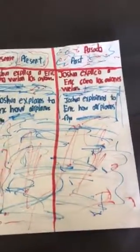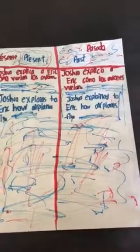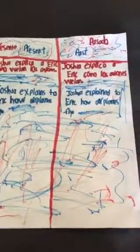Presente, present: Joshua explica a Eric cómo vuelan los aviones. Joshua explains to Eric how airplanes fly. Pasado, past: Joshua explicó a Eric cómo los aviones vuelan. Joshua explained to Eric how airplanes fly.